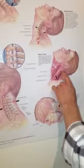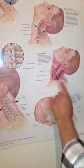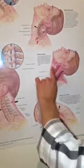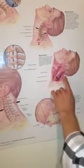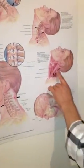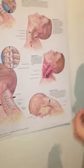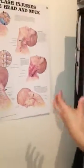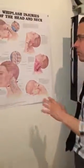Let's start with the muscles. We have our SCM muscle, and many other muscles including your trapezius. These get injured — you tear muscle fibers.